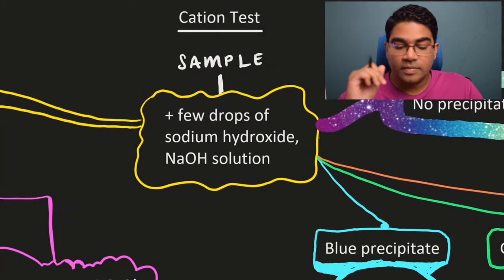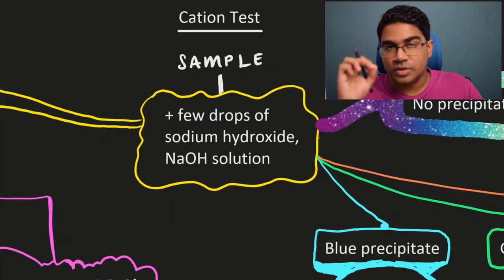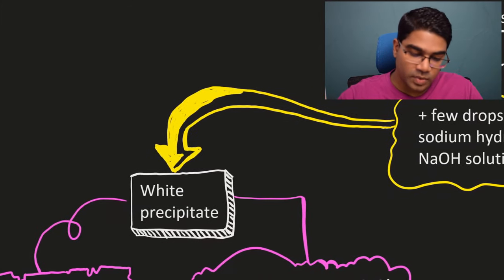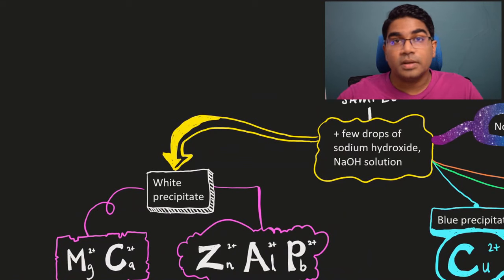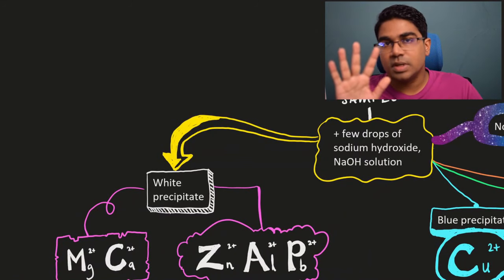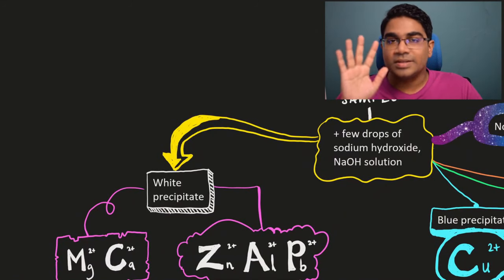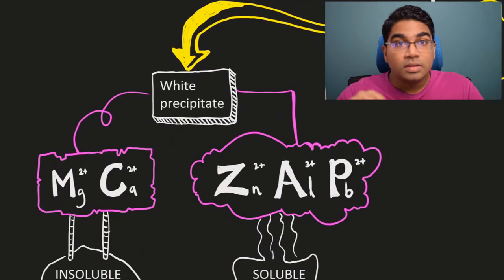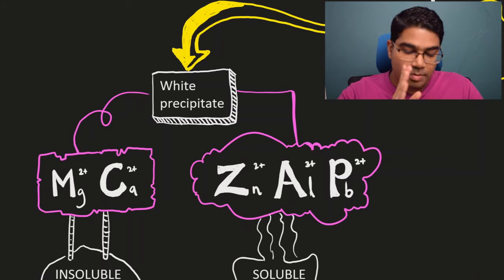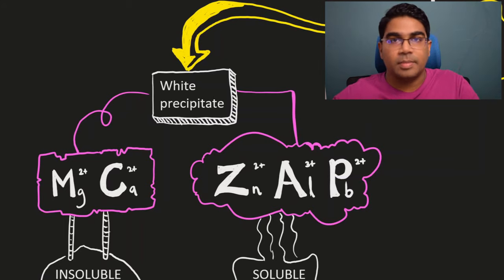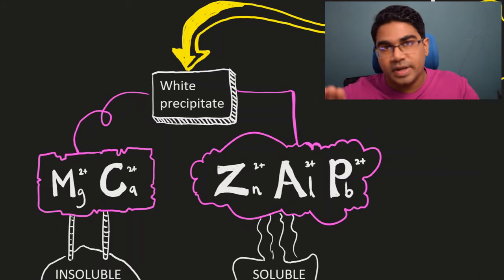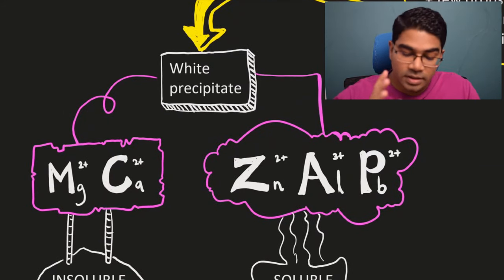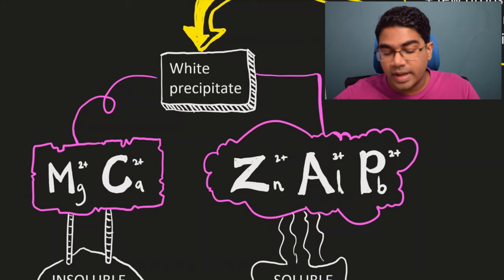Now what if after we add a few drops of sodium hydroxide solution we have white precipitate? Now if we have white precipitate, then there are five possible ions present in the sample. Remember we are talking about cations here. The five possible cations are MAC ZEP. For MAC that is magnesium and calcium ions. Then for ZEP that is zinc, aluminium and lead ions.